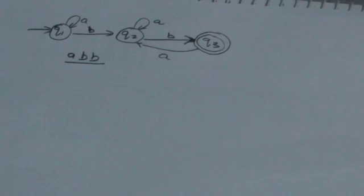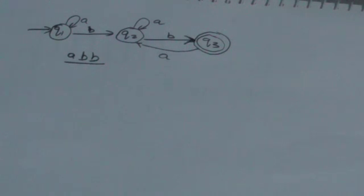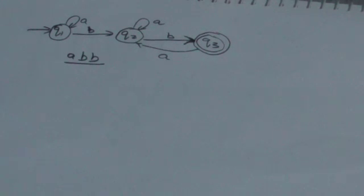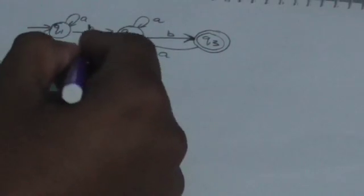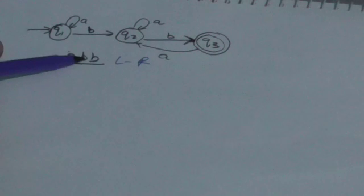Remember: whenever the machine starts reading any input string, it always starts from the initial state — that's why it is called the initial state. It reads the input string from left to right, so first it will read 'a', then 'b', then the second 'b'.